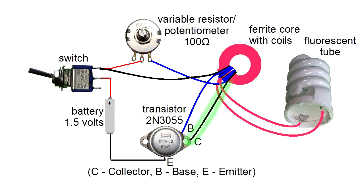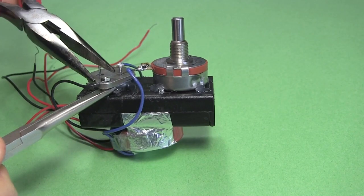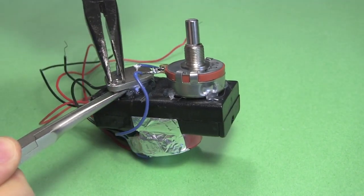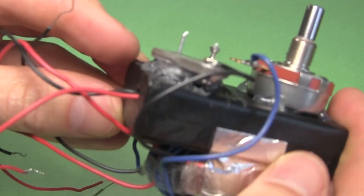Then I connected one end of the black coil to the collector of the transistor. Be very careful which end you connect. It has to be the end that corresponds to the end of the blue wire that goes to the resistor. The collector is the transistor's case. As you can see, I'm connecting it using a small nut and bolt through a hole in the transistor's case. And here it is done.